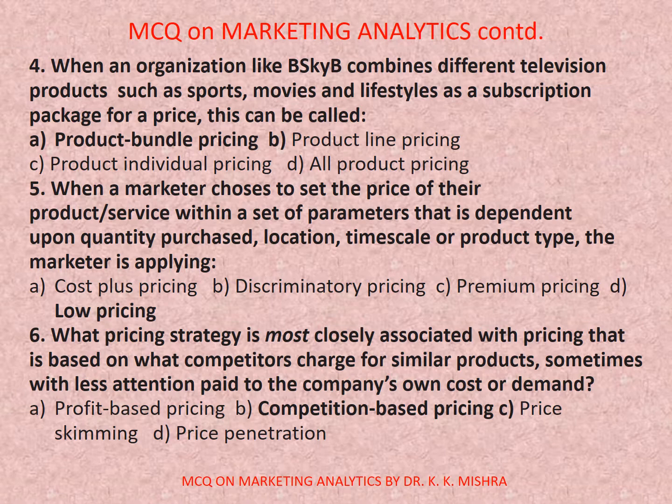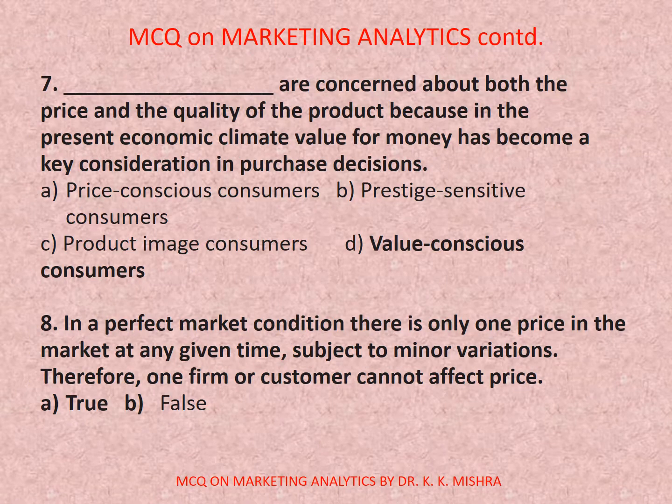Question number seven: Dash are concerned about both the price and the quality of the product because in the present economic climate, value for money has become a key consideration in purchase decisions. Options are: a) price conscious consumers, b) prestige sensitive consumers, c) product image consumers, d) value conscious consumers. Correct option is d) value conscious consumers.